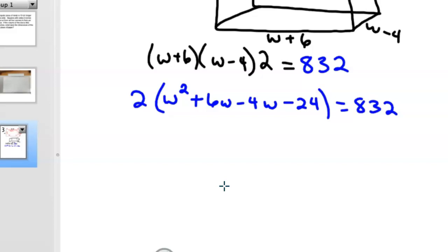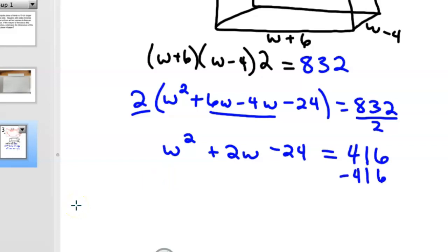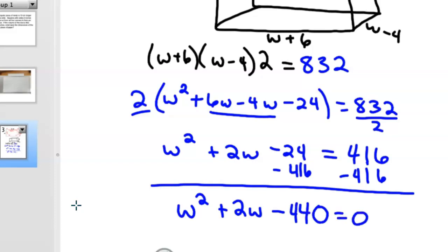What I might do here, instead of distributing the 2 through, might just be easier to divide both sides by 2. That would be way easier. So you'd get W squared plus 2W, if you combine these two, minus 24, equals 832 divided by 2 is 416. All right? Okay, then we'll subtract the 416 left, and now we've got W squared plus 2W minus, you add those two, it gives them the same sign. You'd add 0, 4, looks like 440. So W squared plus 2W minus 440.